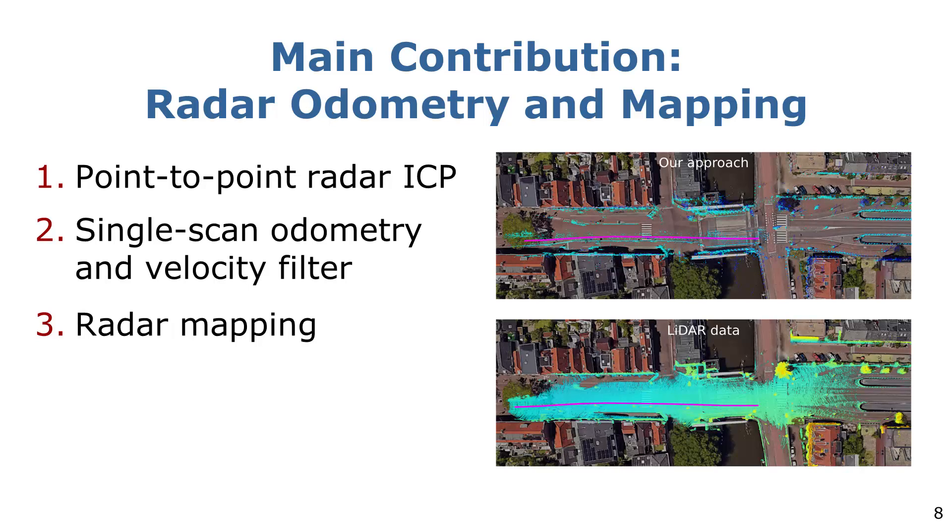The first method presents a novel point-to-point iterative closest point technique, specifically designed to harness the velocity information provided by radar sensors. The second method is tailored for low-speed scenarios, where the radar is being covered by large moving obstacles, such as trucks and buses. We also present the mapping stage and introduce a simple yet effective filtering step to improve the precision of the resulting map.